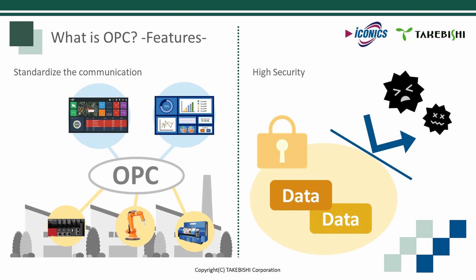The second key feature is a high-level security that is guaranteed. Cyber security issues in relation to social infrastructure systems such as power plants are widely noticed in industrial automation. OPC is a highly secure communication protocol with built-in features to protect against various security threats such as spoofing, eavesdropping and tampering. The BSI, the German Federal Ministry of Security and Information Technology, has also recognized this security level through in-depth evaluations.